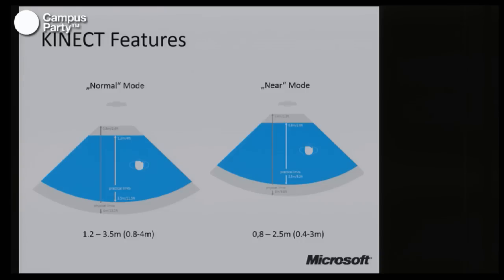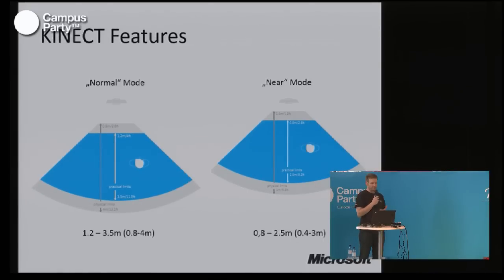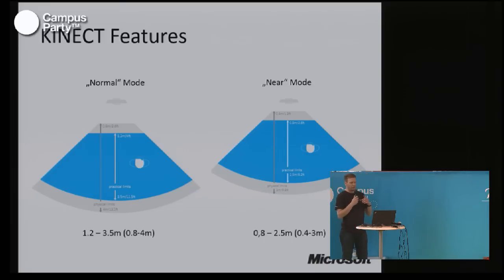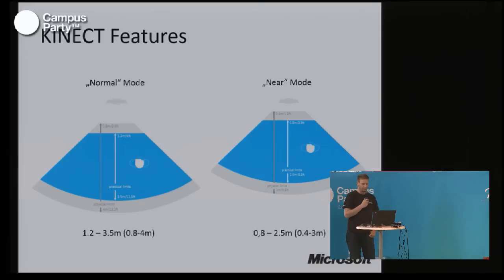The Kinect has two different modes. The normal mode — what we know from the Kinect for Xbox — covers about 1.2 to 3.5 meters, which is the active range where you can really interact with the device. The Kinect for Windows has an additional mode which allows more gesture interactions if you are close to a PC, covering a range between 0.8 and 2.5 meters.